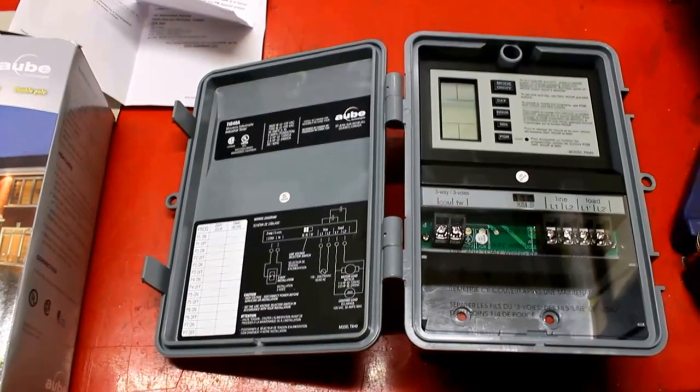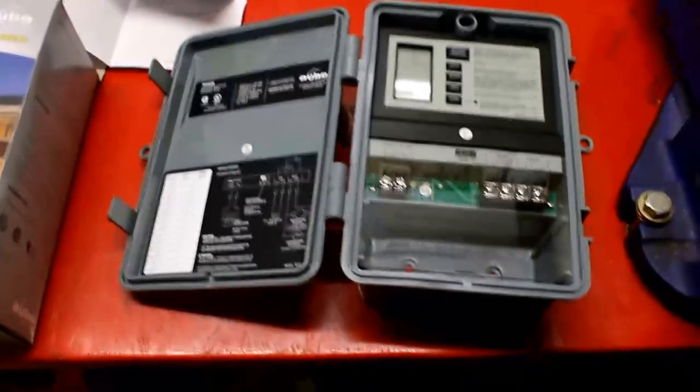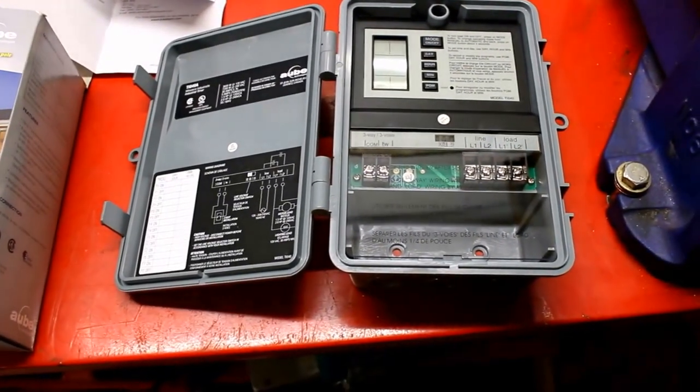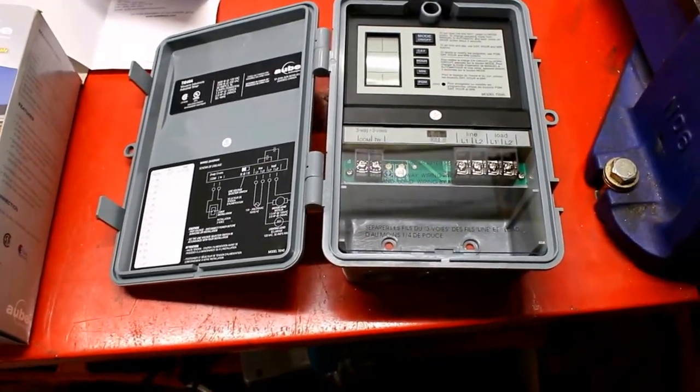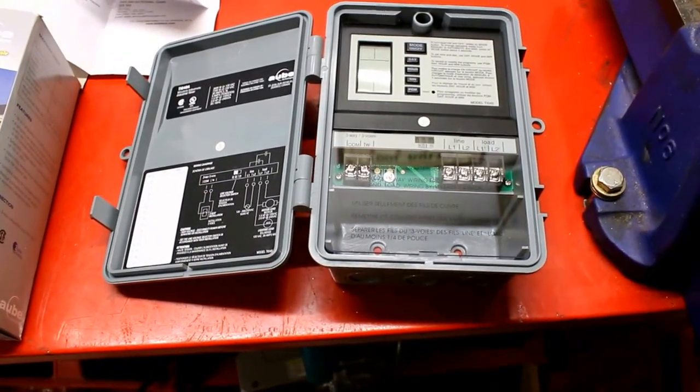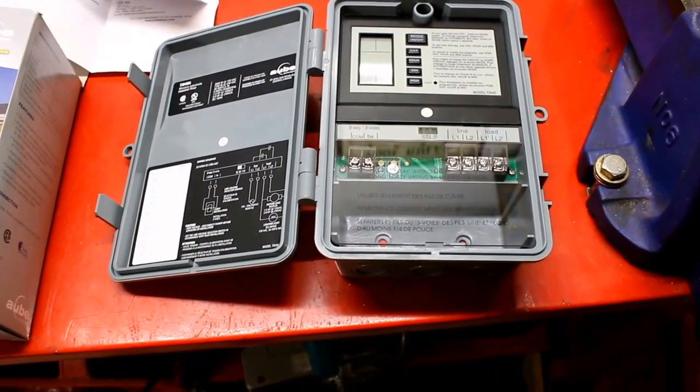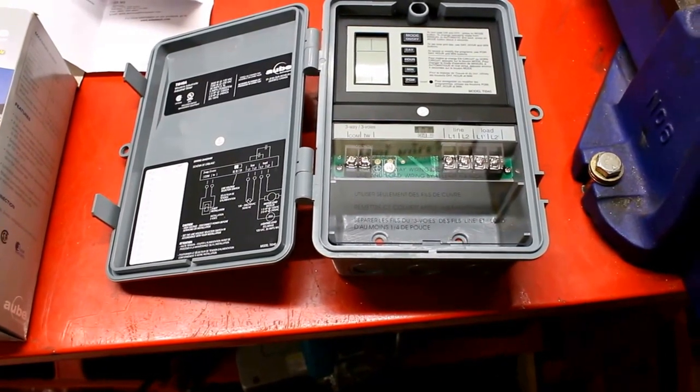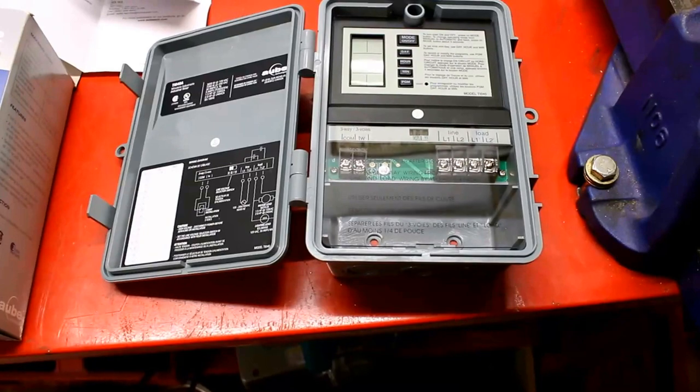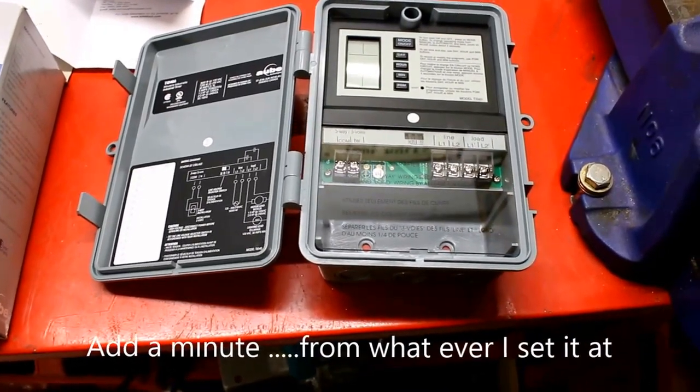Then I'll probably do it every other day, vent the tank for two minutes or something like that. Then I'll just see how that controls the condensation and if I need to do it every day I'll just change the program or increase the duration from one minute to two minutes. So that's a very basic readily available electronic timer.